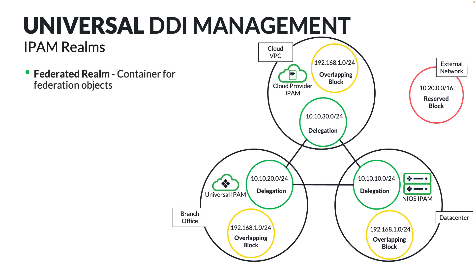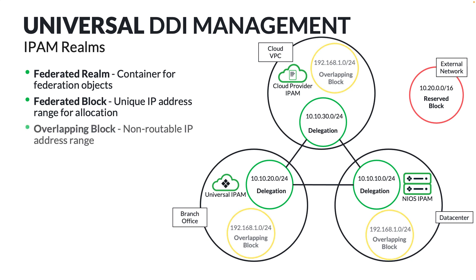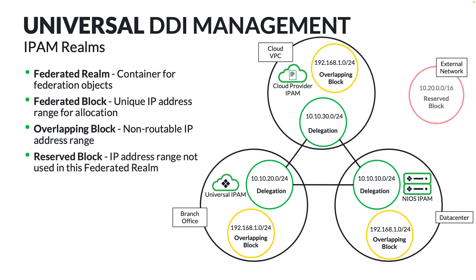A federated realm is a container for federation policy objects. A federated block specifies an address range that can be allocated and delegated for unique addresses across an entire network. An overlapping block represents an address range that can be reused throughout the entire environment, but will never be routable to each other — for example, a device that's being used behind a NAT gateway. A reserved block represents an address range that must not be used by any cooperating IPAM service.